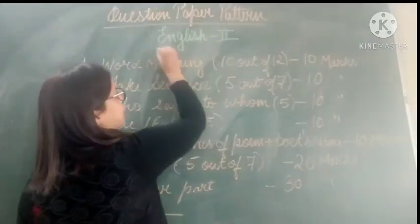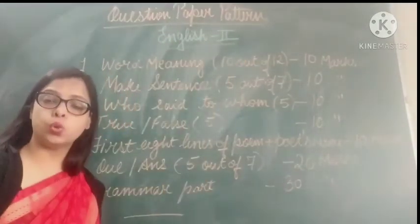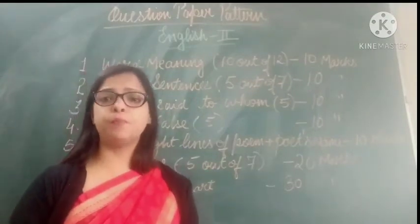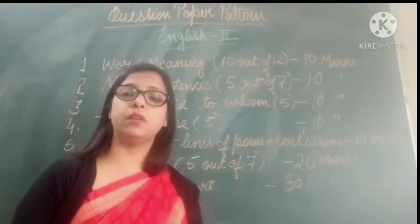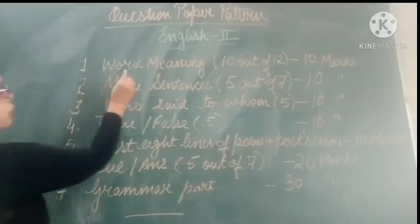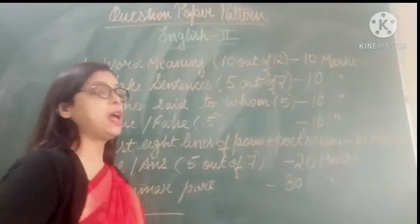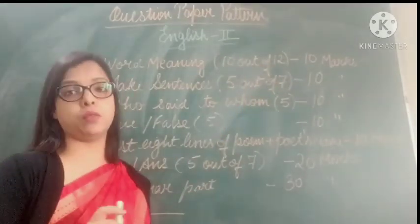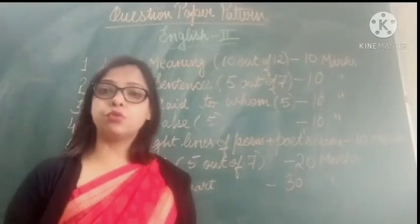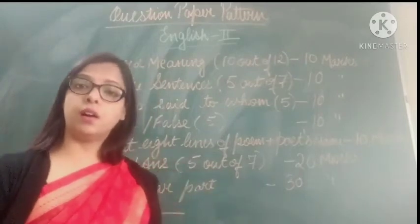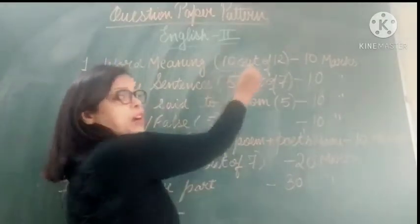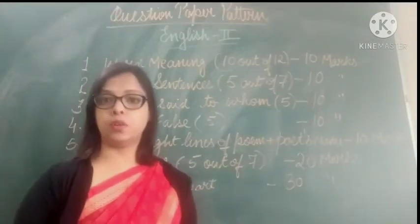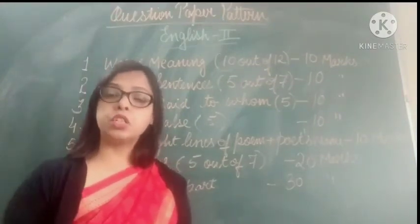Question paper pattern. First I will tell you of English 2. So children, the question paper will be of 100 marks total. The first question will come of word meaning. 12 words will be there, out of which you have to write any 10 word meanings that you know properly.